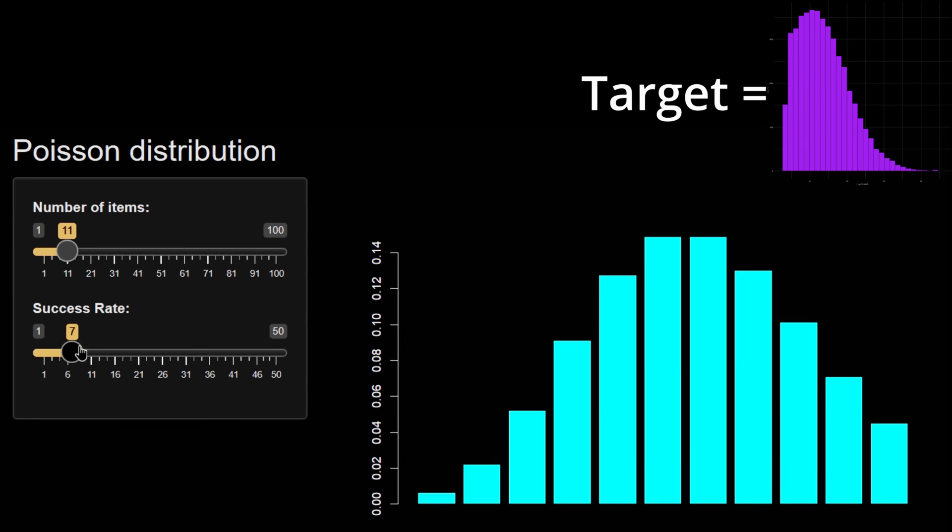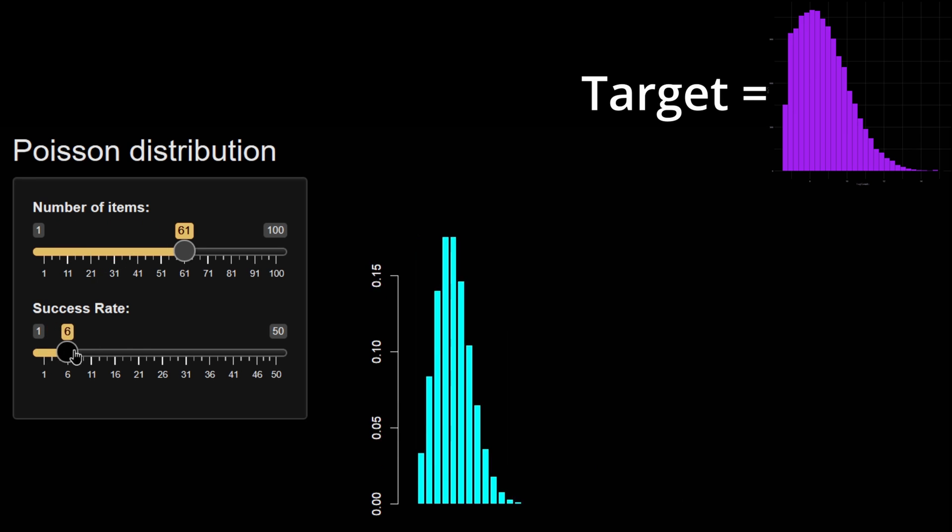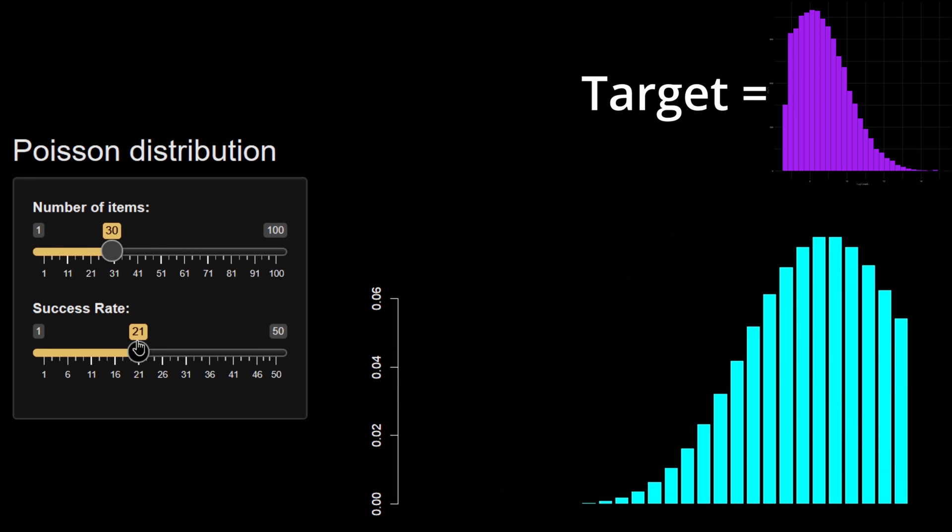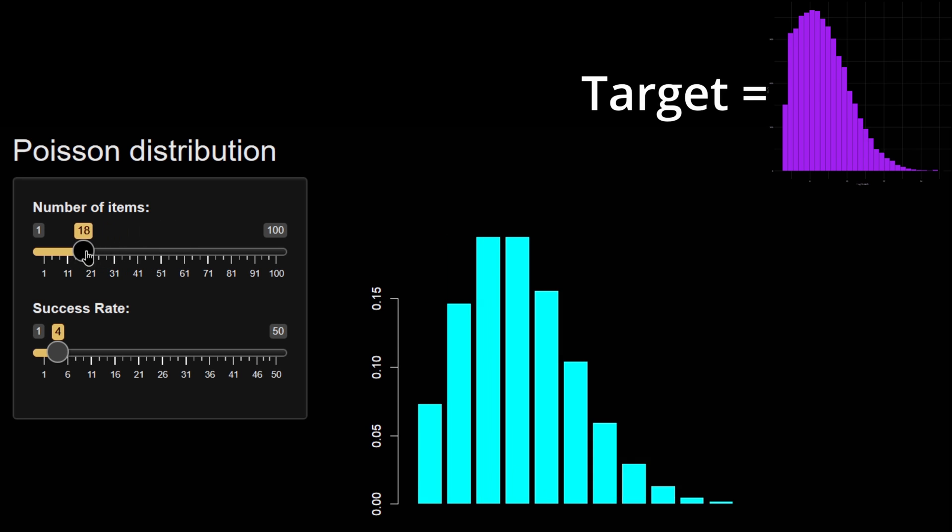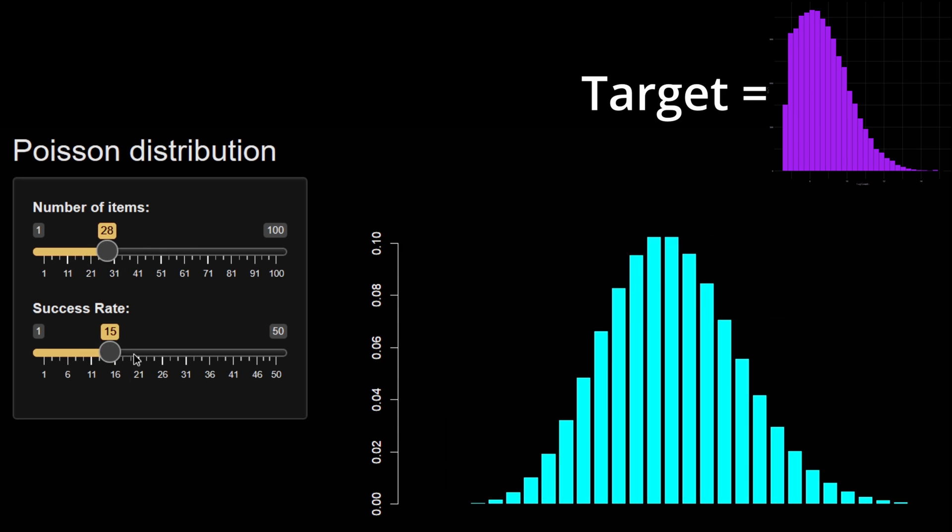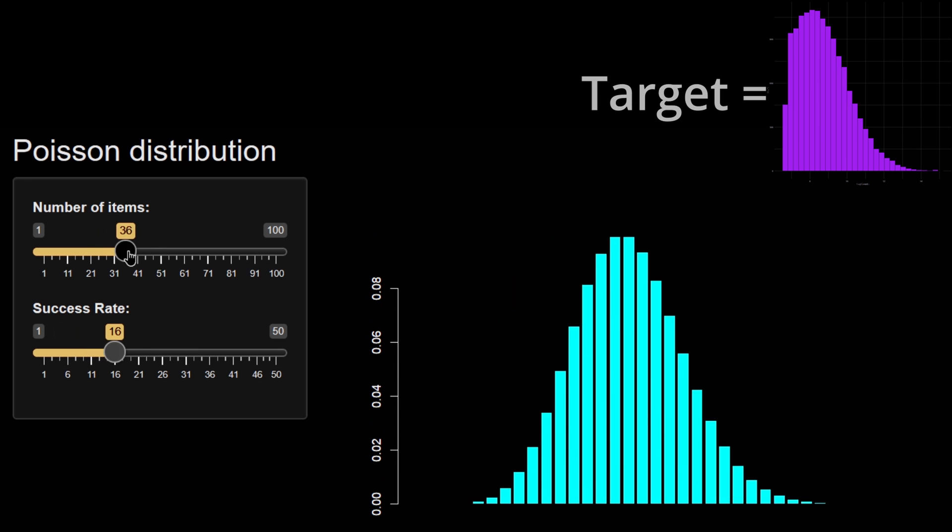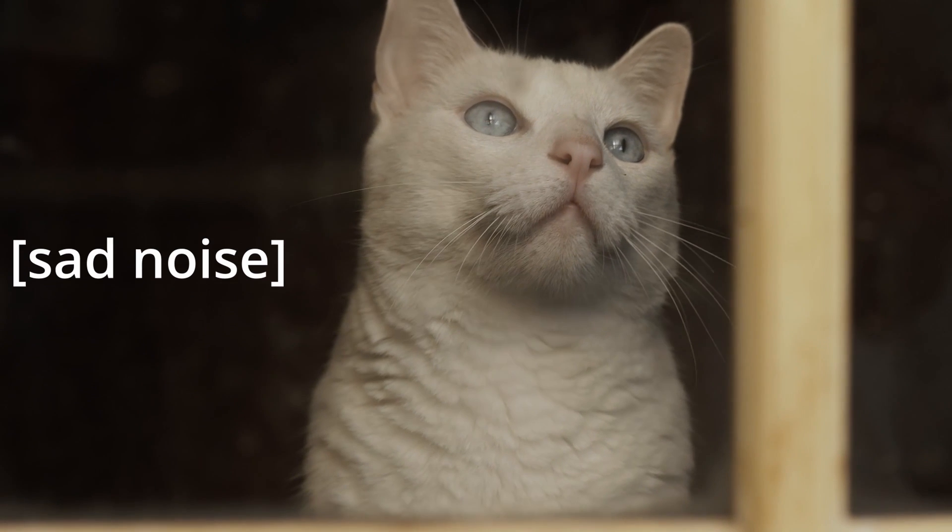However, as you can see, no matter how I try to move the parameters around, we cannot get the model to fit the data. This is because in Poisson, the mean and variation are locked onto each other. The higher the mean, the higher the variation. Therefore, we'll have to look for another model.